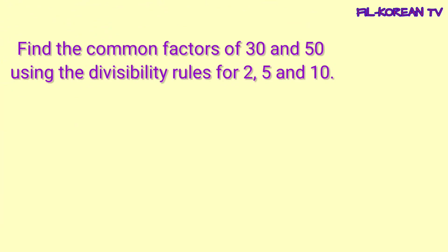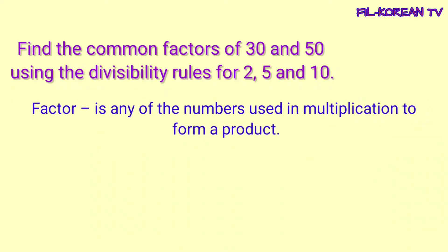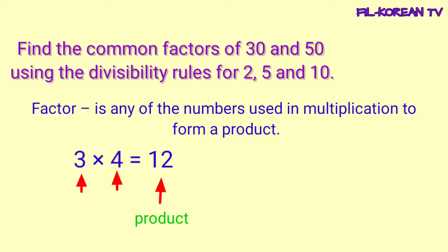Ngayon naman gamitin natin yung divisibility rules for 2, 5, and 10 para makuha ang common factors ng numbers. Find the common factors of 30 and 50 using the divisibility rules for 2, 5, and 10. Bago natin kunin yung common factors ng 30 at 50, alamin muna natin yung kahulugan ng factor. Factor is any of the numbers used in multiplication to form a product. Kapag sinabi nating factor, ito ay number na ginagamit natin sa pag-times para makuha natin yung product. Example: 3 times 4 equals 12. Ang 12 ay product, itong 3 at 4 ito yung tinatawag nating factors. 3 and 4 are factors of 12.